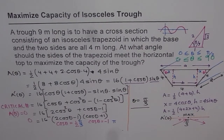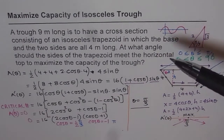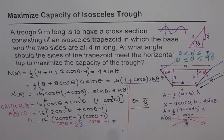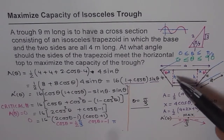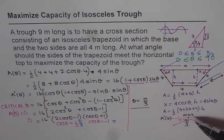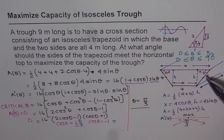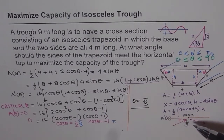So our answer is theta equals π/3, which gives maximum area and therefore maximum capacity for the given trough. To summarize: the key steps were identifying that maximum capacity means maximum cross-section area, relating the angle to the side lengths to build the area formula, and then applying the first derivative test to find the maximum. The answer is theta = π/3.